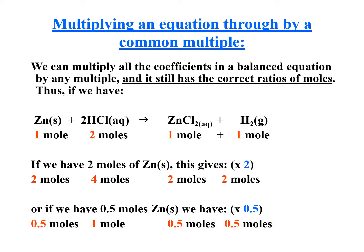We have to understand that multiplying an equation through by a common multiple. We can multiply all the coefficients in a balanced equation by any multiple. And it still has the correct ratio of moles. If this is your original equation, 1 is to 2 is to 1 is to 1. If I multiply the whole thing by 2, so magiging 2, 4, 2, 2, correct ratio pa rin yun. Likewise, if I multiply it by 0.5, so magiging 0.5, 1, 0.5, 0.5, the same. It is still a correct ratio of moles.